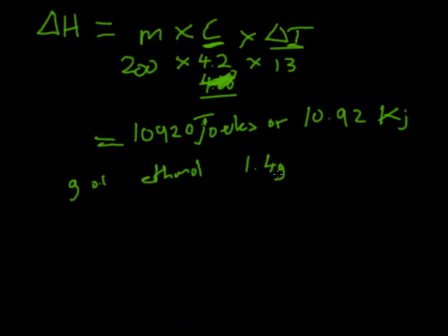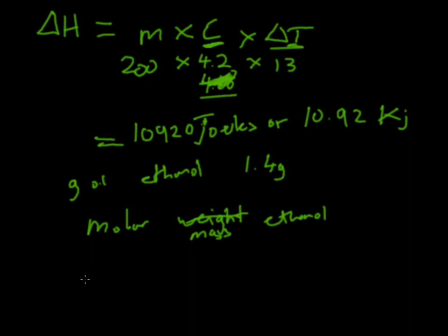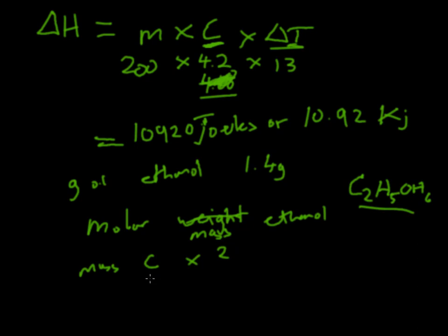To figure that out we look at the periodic table to find the molar mass of ethanol. Ethanol is C2H5OH — so that's 2 carbons, 6 hydrogens, and 1 oxygen. We multiply the molar mass of carbon by 2, add 6 times the molar mass of hydrogen (which is close enough to 1), and add 1 times the molar mass of oxygen. Put it all together and you get 46.1 g/mol as the molar mass of ethanol.